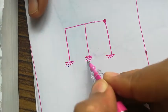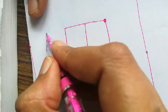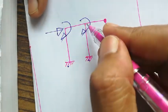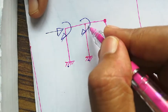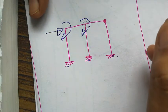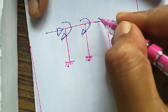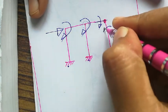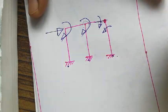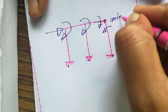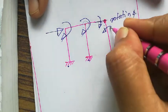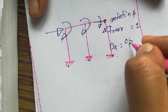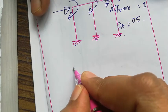For the next problem: the fixed bases contribute zero. There is one translation and one rotation at the fixed joint. Since there is an internal hinge, the beam and column are free to rotate independently, giving two different rotations there — for a total of four rotations. Combined with one translation, the degree of freedom is five.